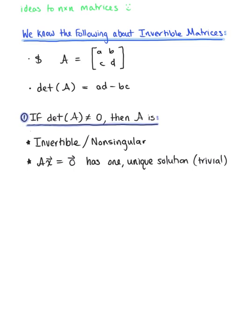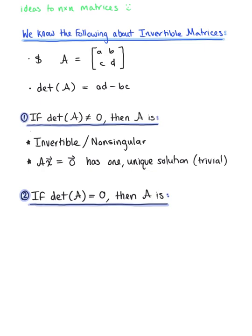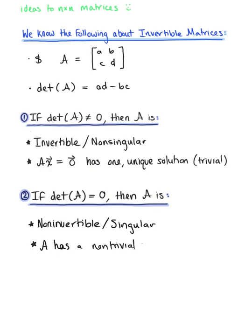Which brings us to case number 2. If the determinant of matrix A is equal to 0, then we can conclude that matrix A is non-invertible, or singular. If a matrix A is non-invertible, this is telling us that A has a non-trivial null space, which is exactly what we are looking for.